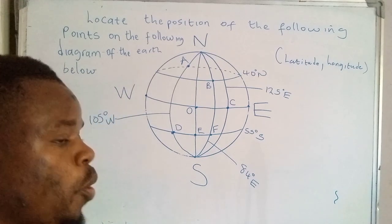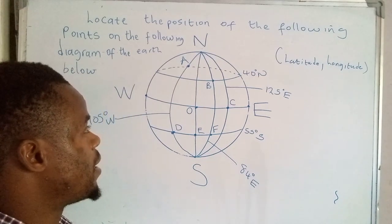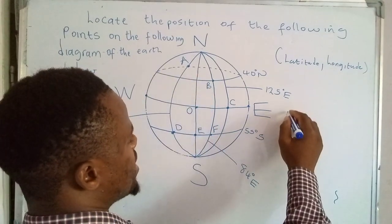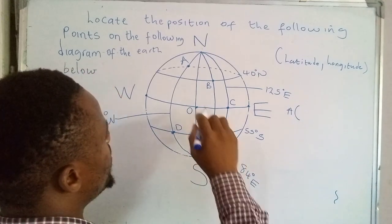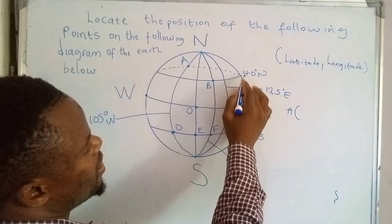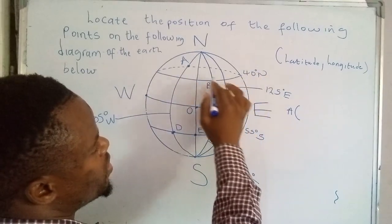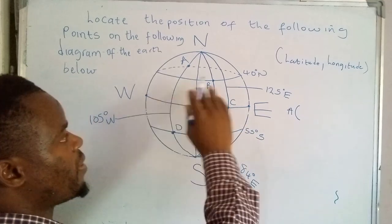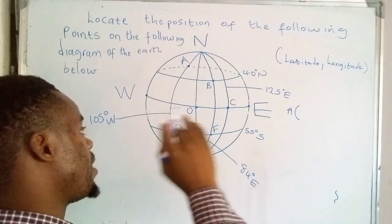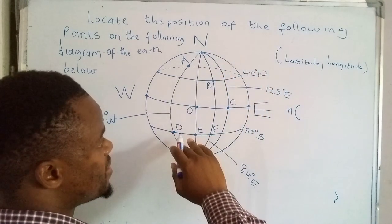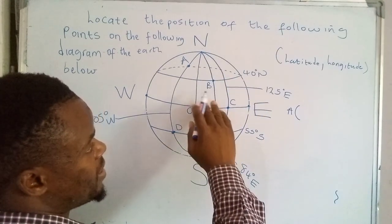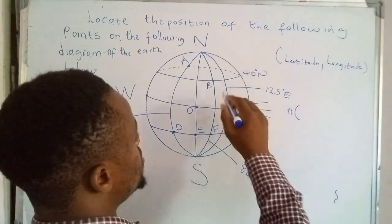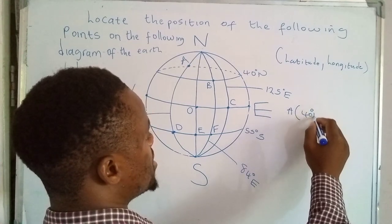And these two have to be written in coordinate form. So now let's start with the first point, which is point A. So point A is actually located on, let's take a note of this. So the latitude here is 40 degrees north. So the equator actually separates the Earth into two hemispheres, the northern hemisphere and the southern hemisphere. So the latitudes in the northern hemisphere have the unit north. So we have 40 north, 40 degrees north.